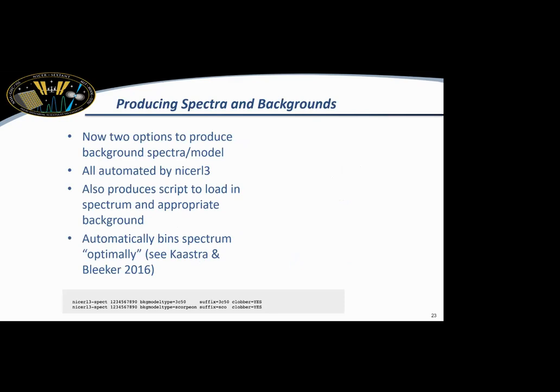Okay. So NICER L2 and L3 basically run like this command at the bottom. And now there are two options for backgrounds. So up until a few months ago, these backgrounds were separate and you had to run whole different scripts. But now it's all bundled into the NICER L3 script. So it produces all the appropriate background files. So there's two options, which I'll delve more into in a minute. One is 3C50, which is the template model. And then there's the true background model called Scorpion that Craig has developed. So this is all automated by NICER L3 and it produces a script that loads in the files. So basically all you have to do is go to XSPEC and load the script and it just brings everything up for you. And then the spectra are automatically binned using the Kaastra and Bleeker paper that was discussed by Matteo earlier this morning.